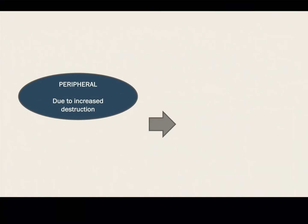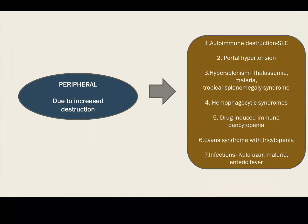Peripheral pancytopenia occurs when there is increased destruction — that could be autoimmune destruction due to SLE, portal hypertension and hypersplenism leading to destruction, or due to infections like Kala Azar, malaria, or enteric fever.